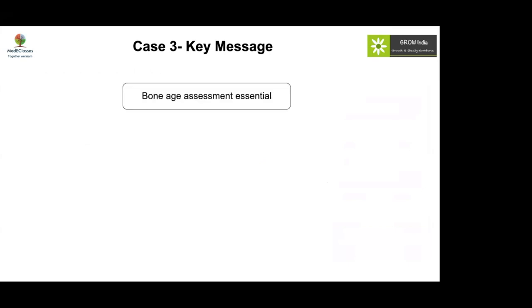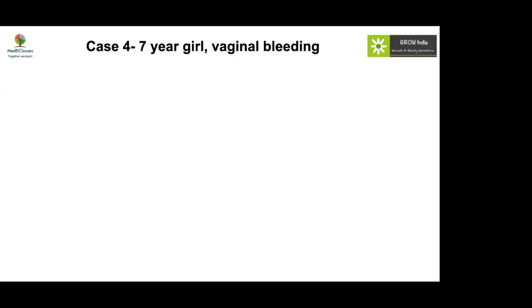Key messages from this case: whenever a child has premature breast development with some height advancement, a cost-effective bone age X-ray should be done first. If bone age is advanced, one is dealing with precocious puberty. If LH is also high, GnRH analogue therapy is indicated. Regarding MRI: if the child is under six years of age, MRI brain should be performed routinely; otherwise, MRI is indicated only if there are neurological features.